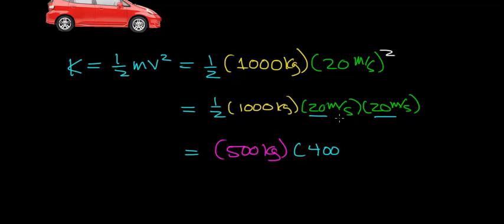And then we have to multiply the units out. Meters per second times a meter per second is a meter squared per second squared. And then when we do 500 times 400, we get 200,000 kilogram meters squared per second squared.